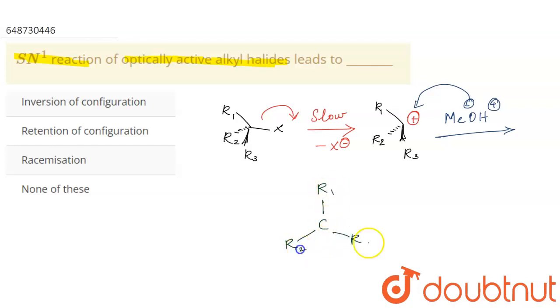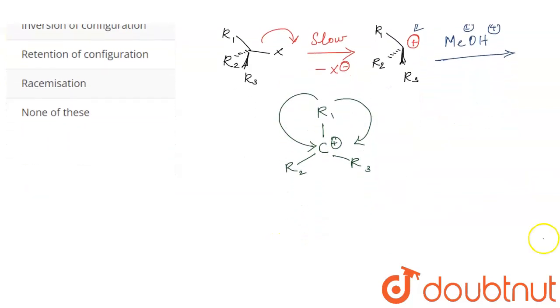So the nucleophile can attack either from this direction or from this direction. There are two possible ways through which the OMe can attack. So if it is attacking in one direction, we will be obtaining a product which is something like this.